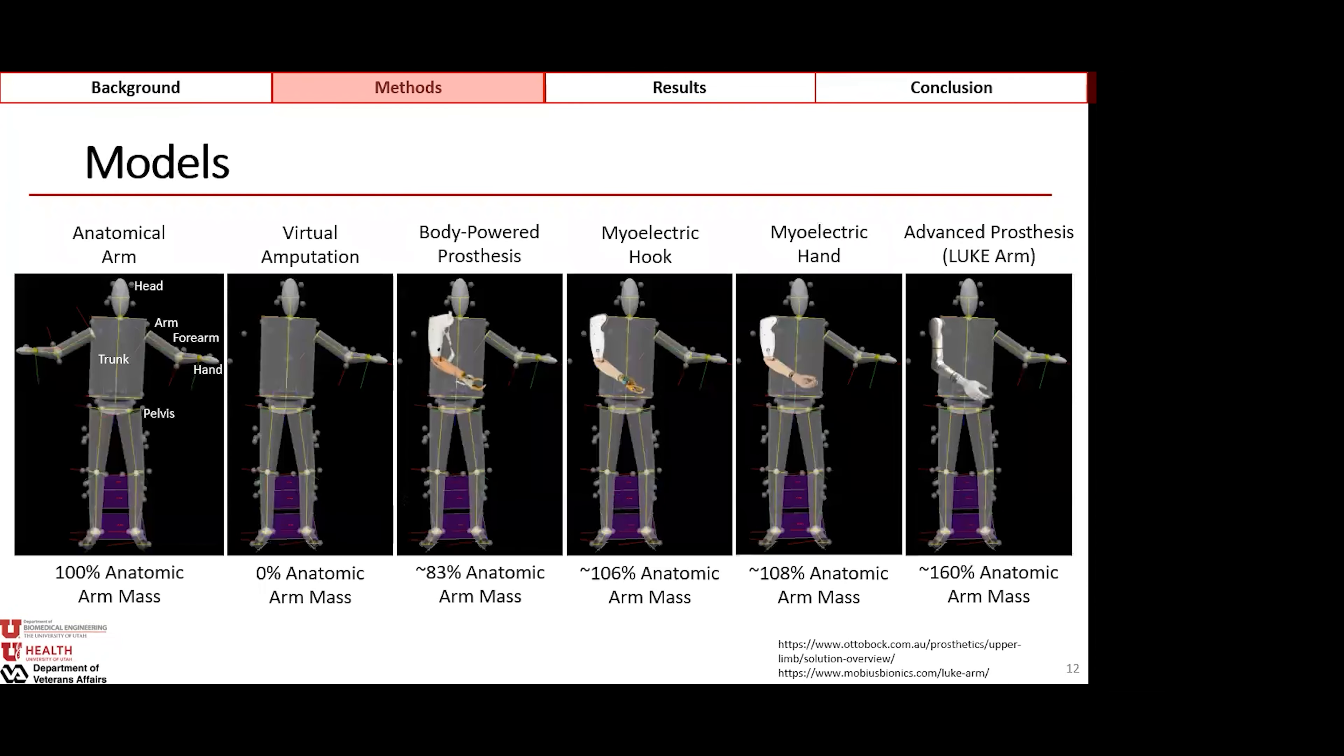To these motion profiles, we applied six different models in our Visual 3D software, where we have on the far left of the slide the anatomic arm. This is representative of the body segment parameters for the subject. We then simulated a virtual amputation where we removed all mass from the right arm, and our four prosthetic parameters are replacing the mass of the right arm, right forearm and hand with prosthetic devices of both increasing complexity and increasing mass, based on the masses reported by the distributor and manufacturer.